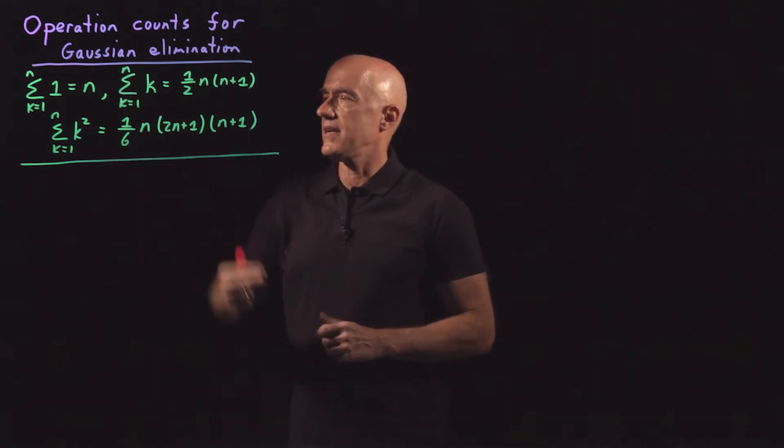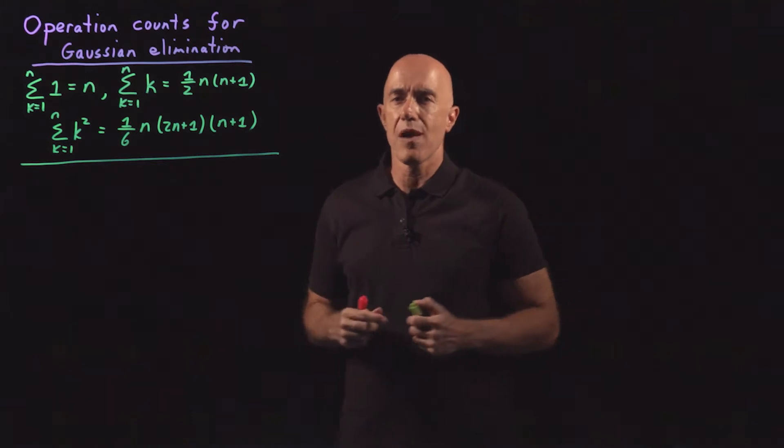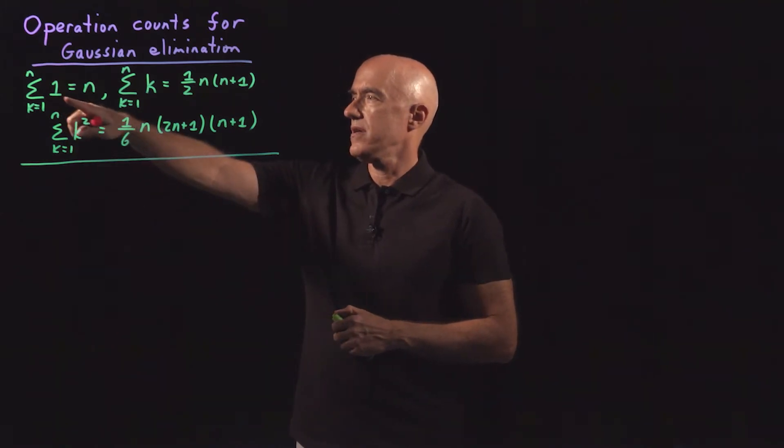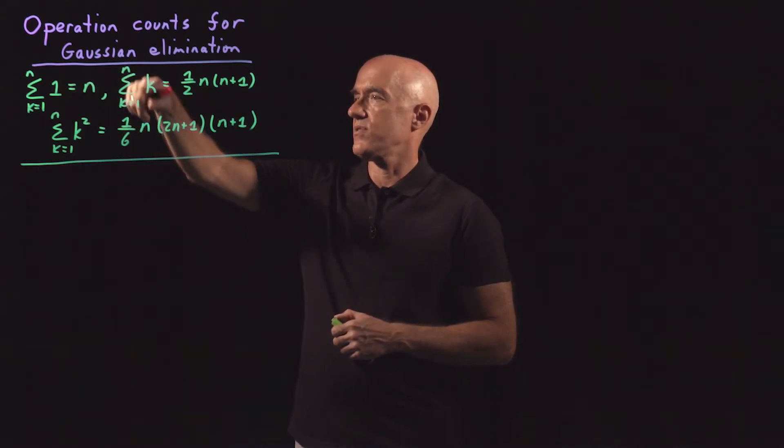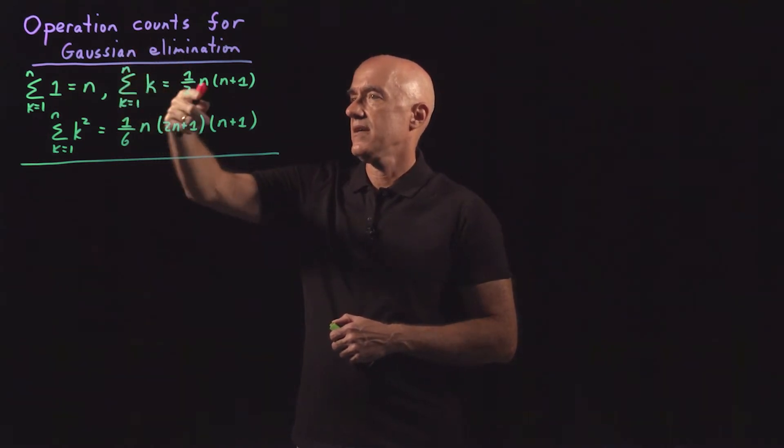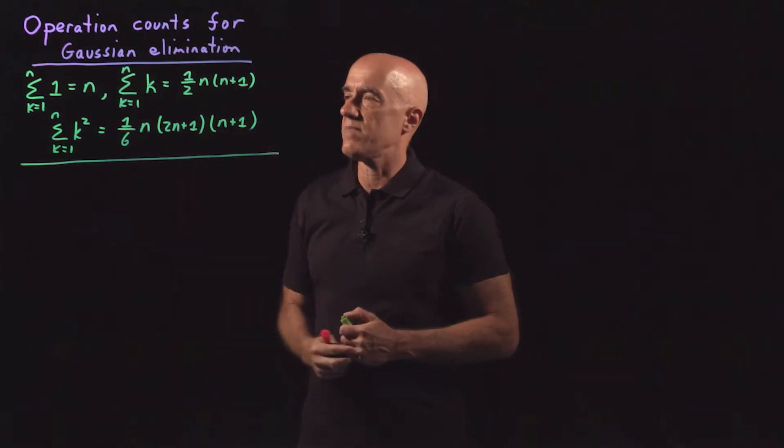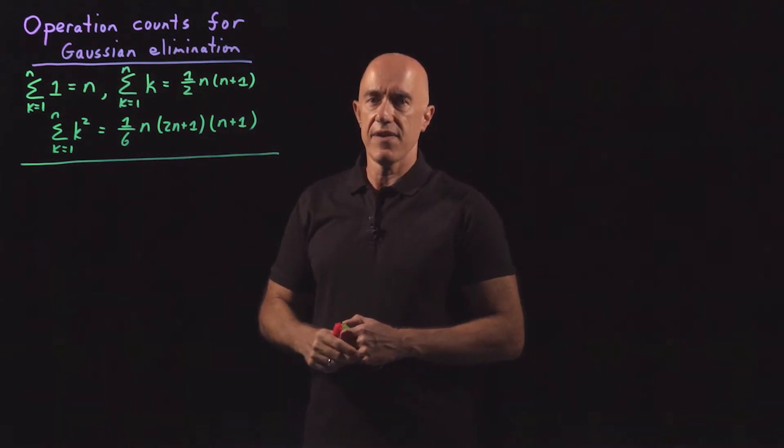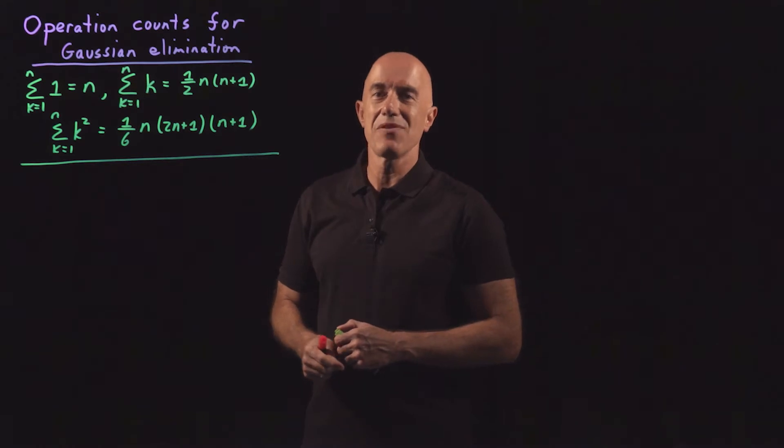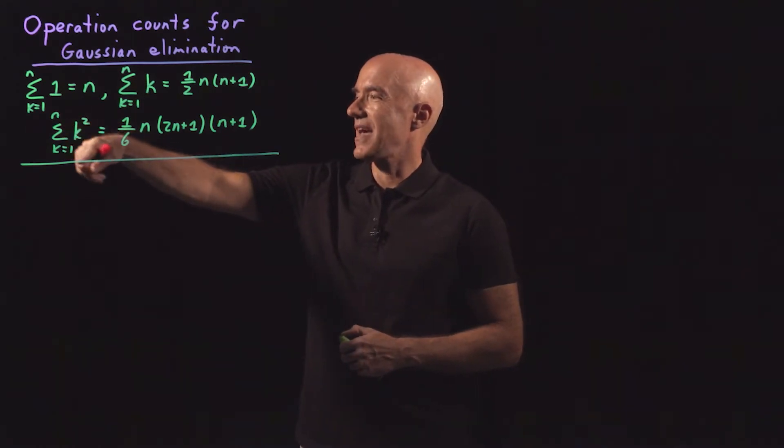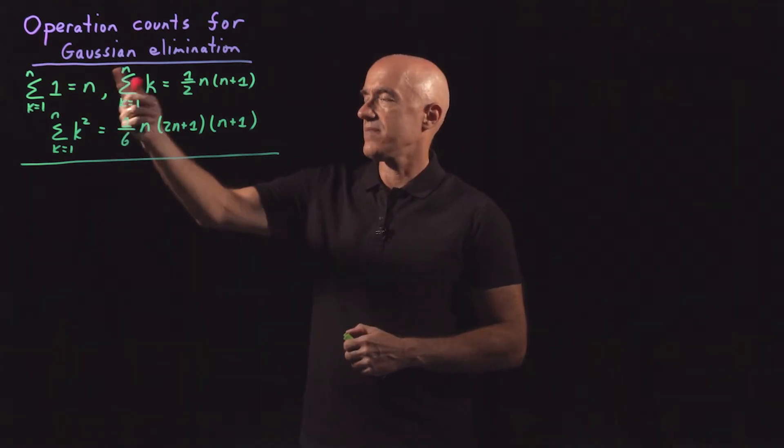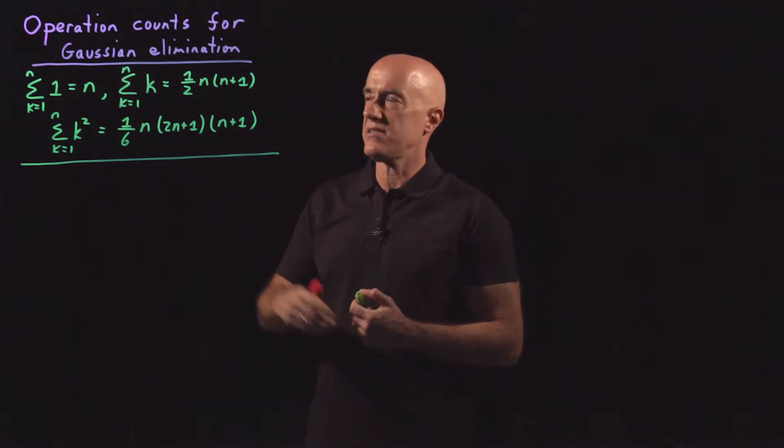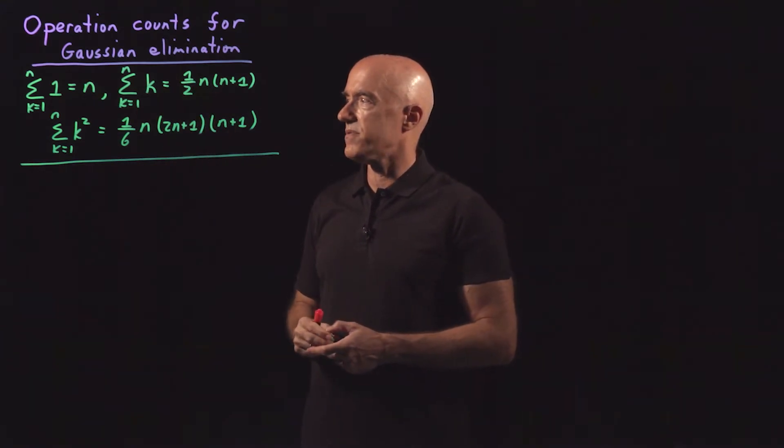So for Gaussian elimination, we need these identities. These are ones that you probably have seen before. The sum of n ones will just be n. The sum of k equals 1 to n of k, which is 1 plus 2 plus 3 plus 4 up to n, is this 1/2 n(n+1), very famous identity made famous by Gauss as a primary school kid. Or the sum from k equals 1 to n of k squared is a little bit more complicated. I think it's worthwhile to derive these things.